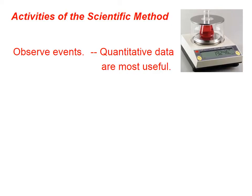There are several activities that the scientific method involves. One is good observations — we need to observe events. In particular, we want quantitative data rather than simply qualitative data. When we have quantitative data, we can use the power of mathematics to help us get an even better understanding than we would otherwise get if we just had qualitative, non-number information.